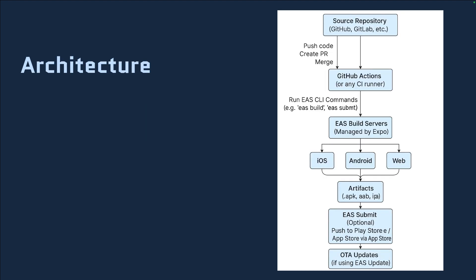This is the architecture of the whole build process. As you can see, there is a source repository where our code resides, and then GitHub Actions — this is an optional step not covered here. Then the build happens, and along with the build, signing also happens for iOS and Android — web is not covered. The last step is submitting the apps to the App Store and Play Store respectively.